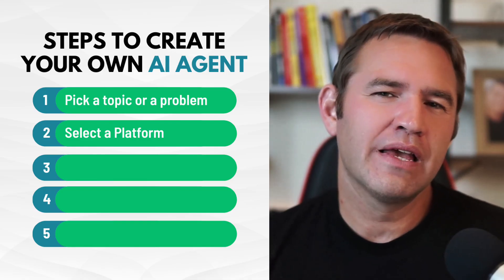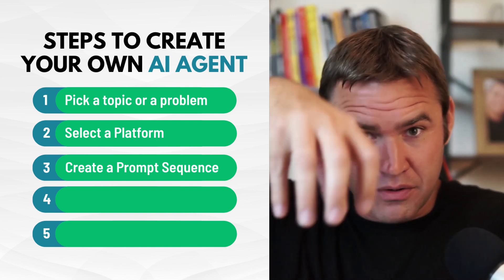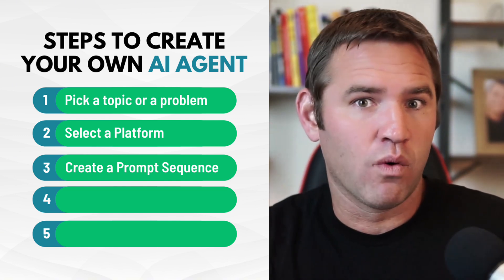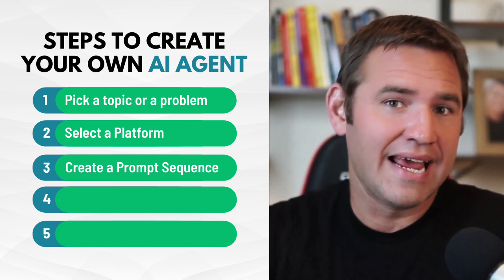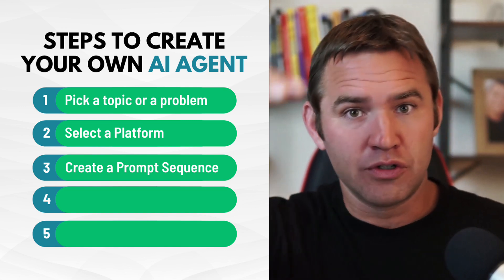Then what we want to do is create a prompt sequence for our framework. We've picked a problem we want to solve, we have a series of steps to solve that problem, and we have a platform to put it together. Now we need to actually prompt the AI agent to follow the right steps in our framework. I may make another video on prompt engineering for coaches and consultants — let me know in the comments if you'd like that. The big idea is we have to take your steps to solve that problem and turn it into an instructional prompt that allows the agent to build out a chatbot or a flow that a user can use.